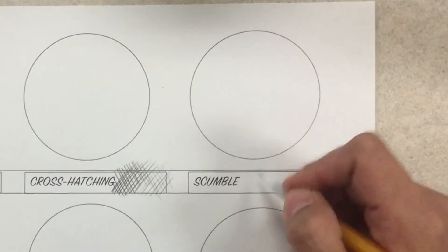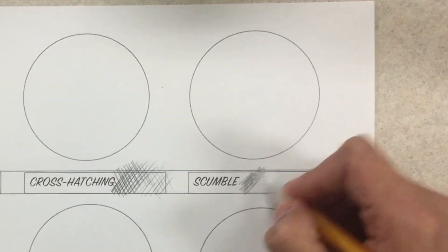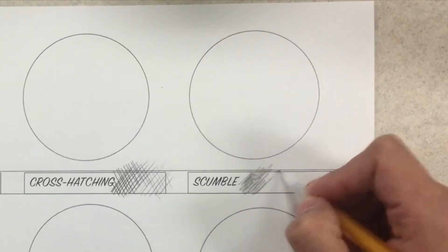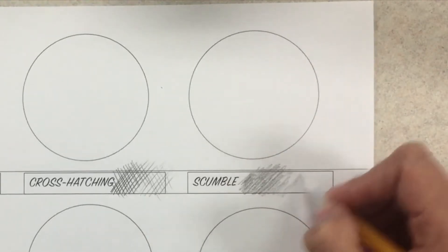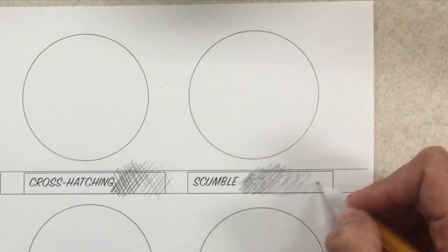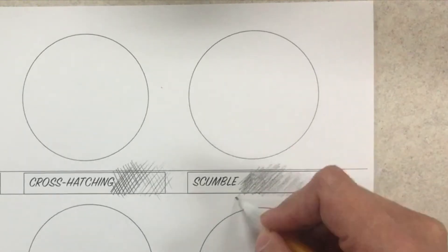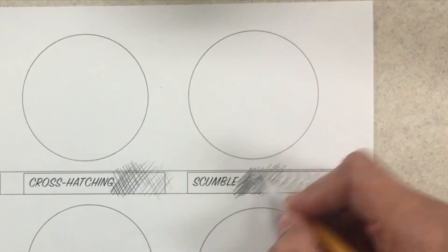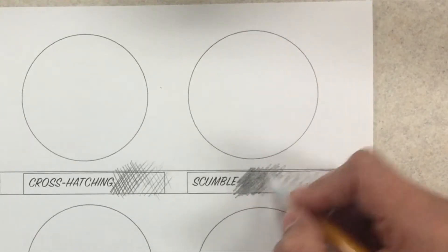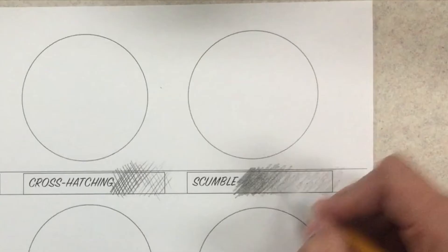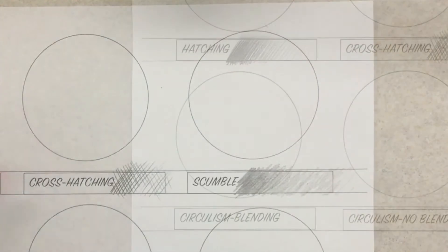Scumble is the idea of going back and forth. Because I know I'm most likely going to blend with my scumble, I'm not too concerned about the fact that it's kind of messy, going in different directions or back and forth in uneven layers, because I know I'm going to blend it most likely.